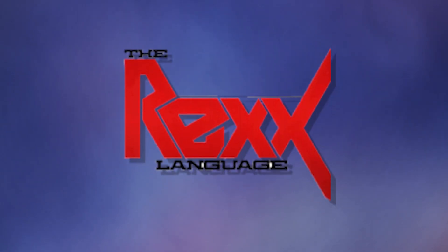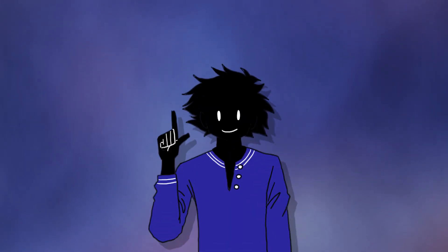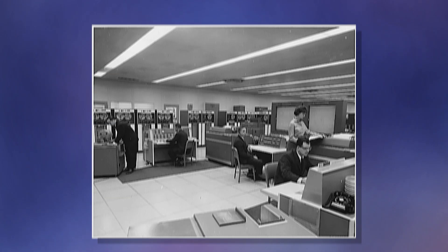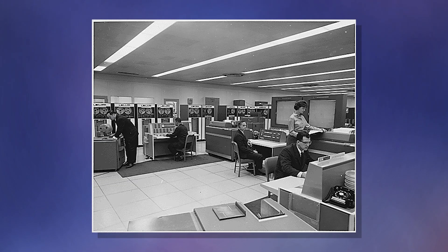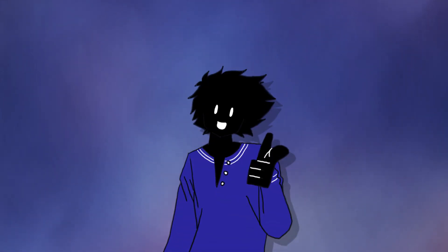REXX, another programming language made at IBM, is mainly used for automation. Its name stands for Restructured Extended Executor. It was also used for processing data on IBM mainframes. Its code almost reads like basic English sentences, as it doesn't use complex symbols or curly braces.